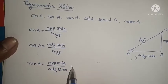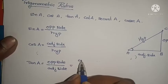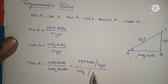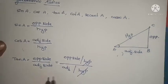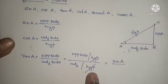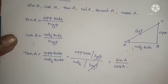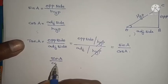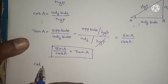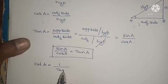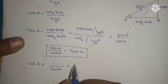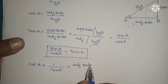If we see carefully, sin A divided by cos A gives us opposite side over hypotenuse divided by adjacent side over hypotenuse. The hypotenuse cancels out, and we get opposite side by adjacent side. So sin A by cos A equals tan A. Also, cot A equals 1 by tan A, which is the reciprocal. So cot A equals adjacent side by opposite side.